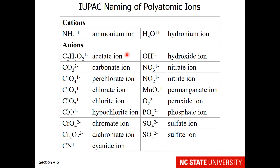Here are some common polyatomic ions used in chemistry. Polyatomic means these are ions composed of more than one atom. Hopefully from previous chemistry courses you're familiar with these; if not, there are flashcards in Moodle. NH4 1+ is the ammonium ion, H3O 1+ is the hydronium ion. You may have come across the acetate ion, and most students have seen the hydroxide ion. The carbonate, nitrate, and these chlorine-based ions and nitrite are ones that can be named based on a naming convention.